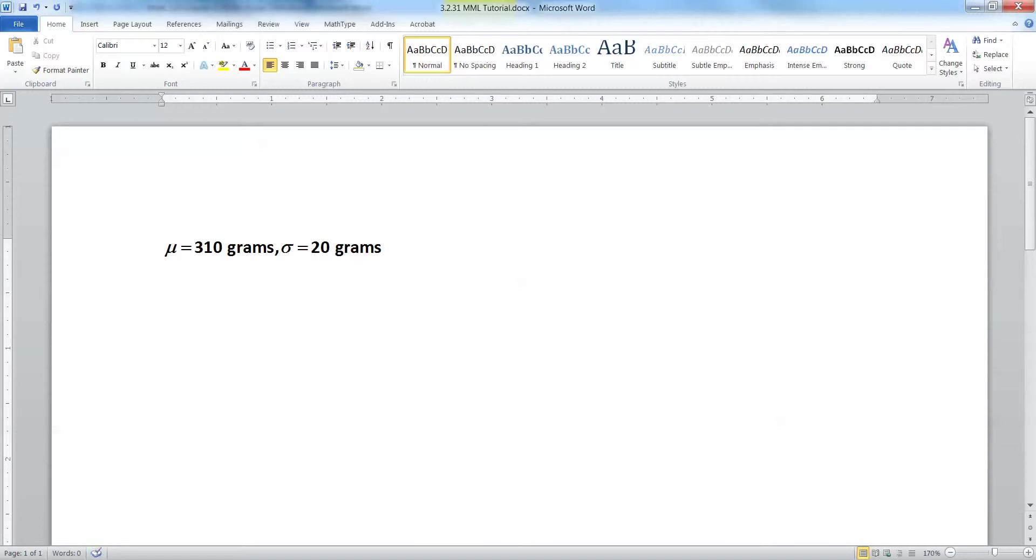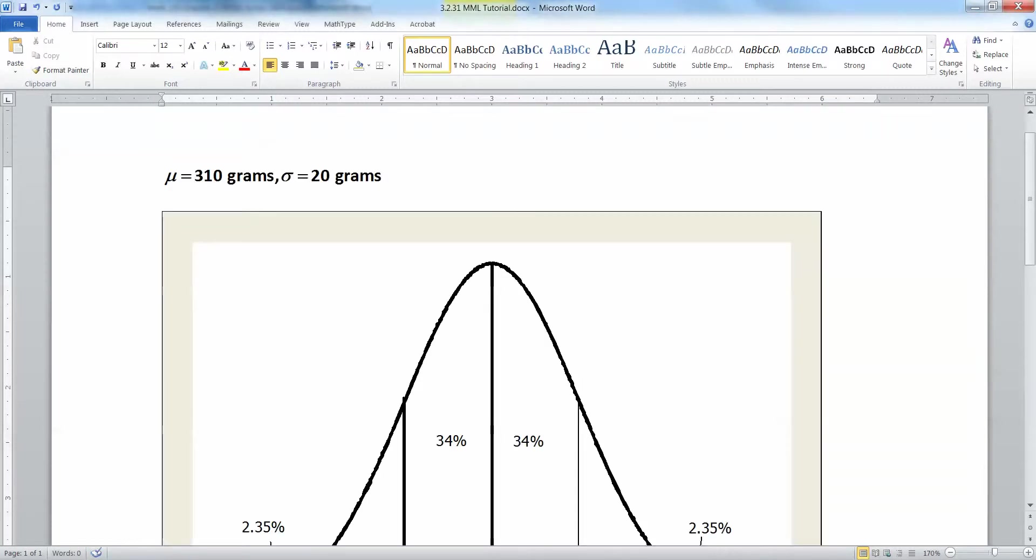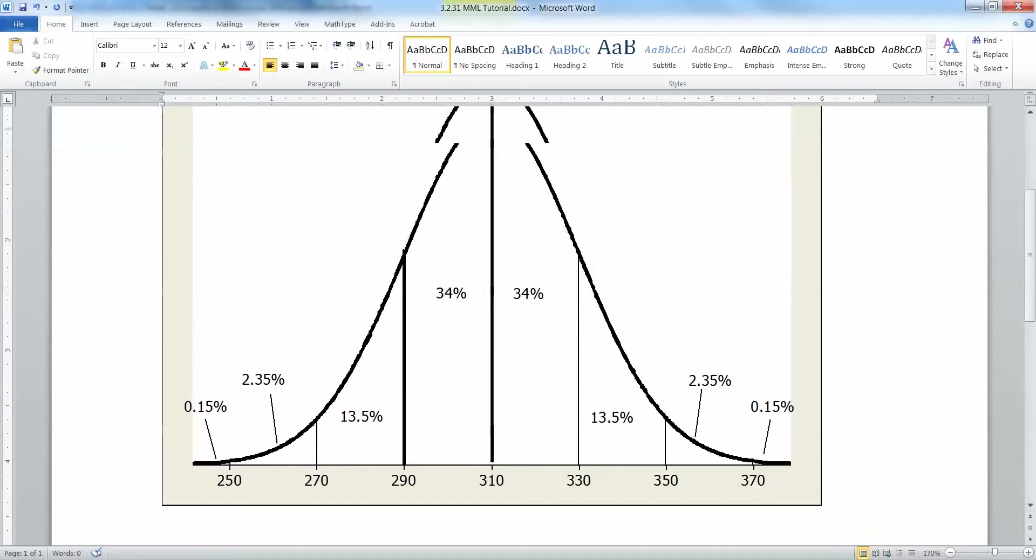Now we need to make a picture so that we can use that picture for the rest of it. Let me start with question A. Actually, before I even get into question A, let me draw a general picture of the whole thing. Here we have it, a general picture of everything. So there's the mean of 310 in the middle. And then I have to make my spacing even all the way across.